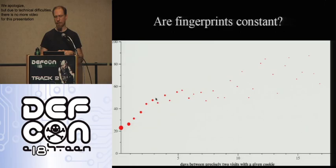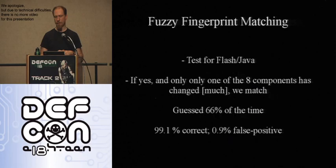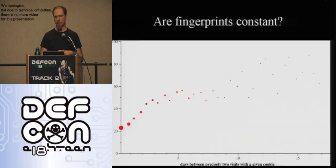The half-life of these fingerprints is about four or five days. At first that seems like a good sign — perhaps fingerprints, while instantaneously identifying, aren't a stable long-term tracking method. Unfortunately, that turned out not to be true.